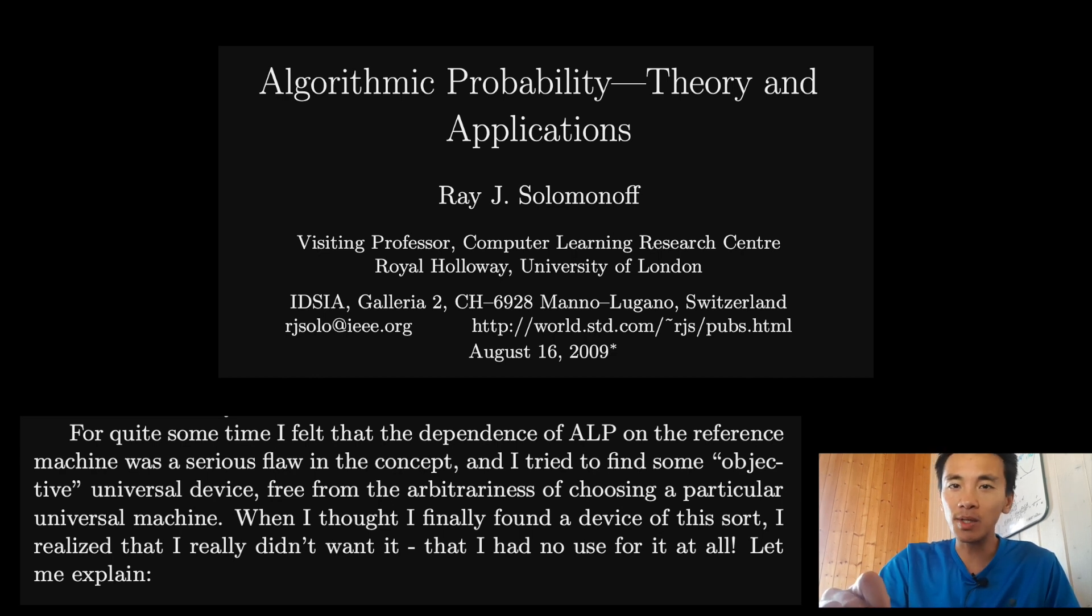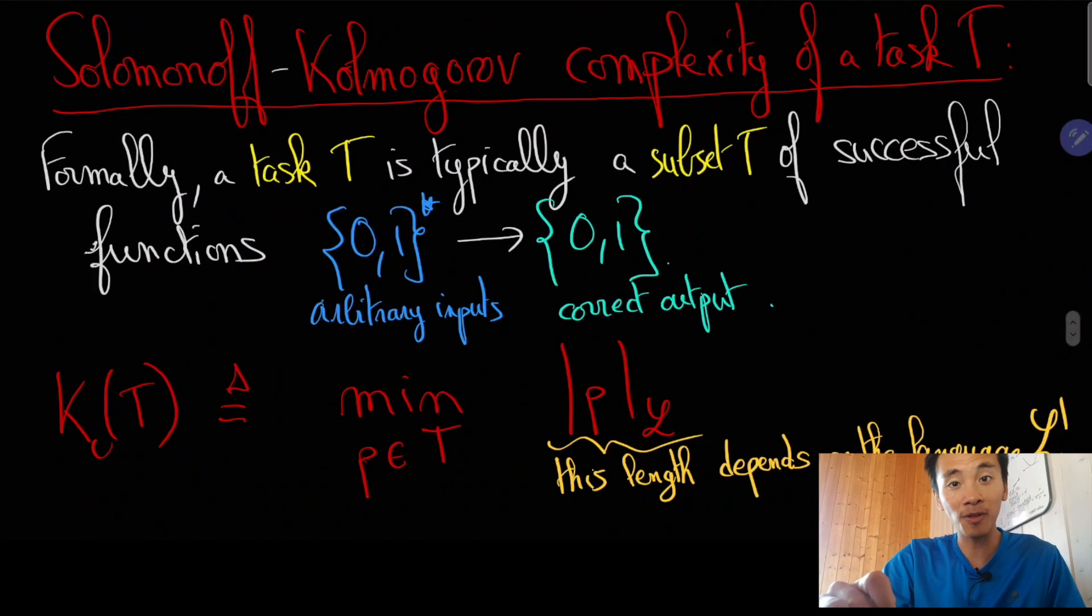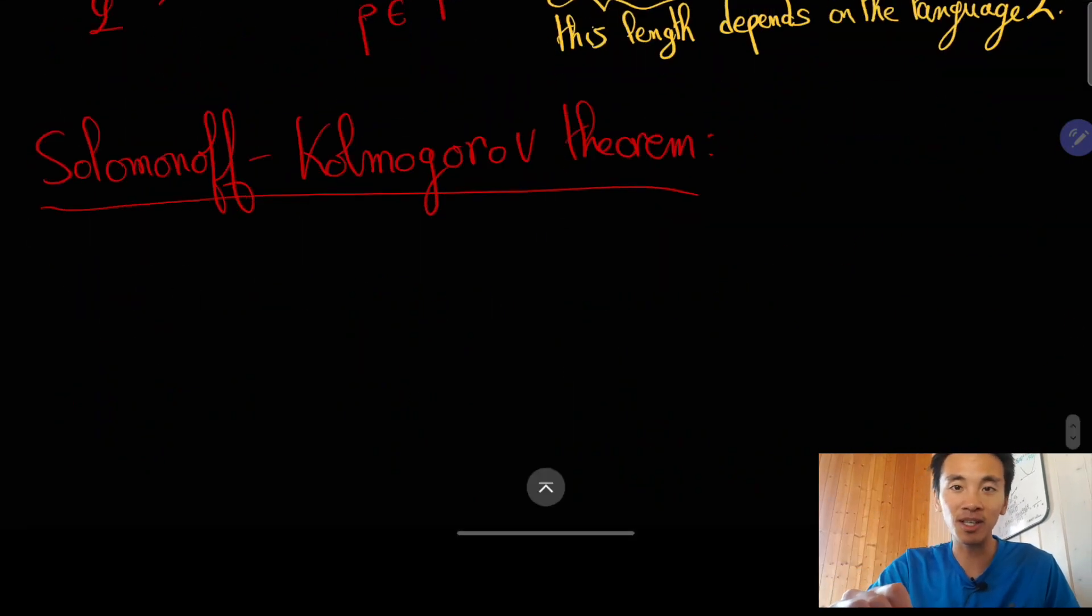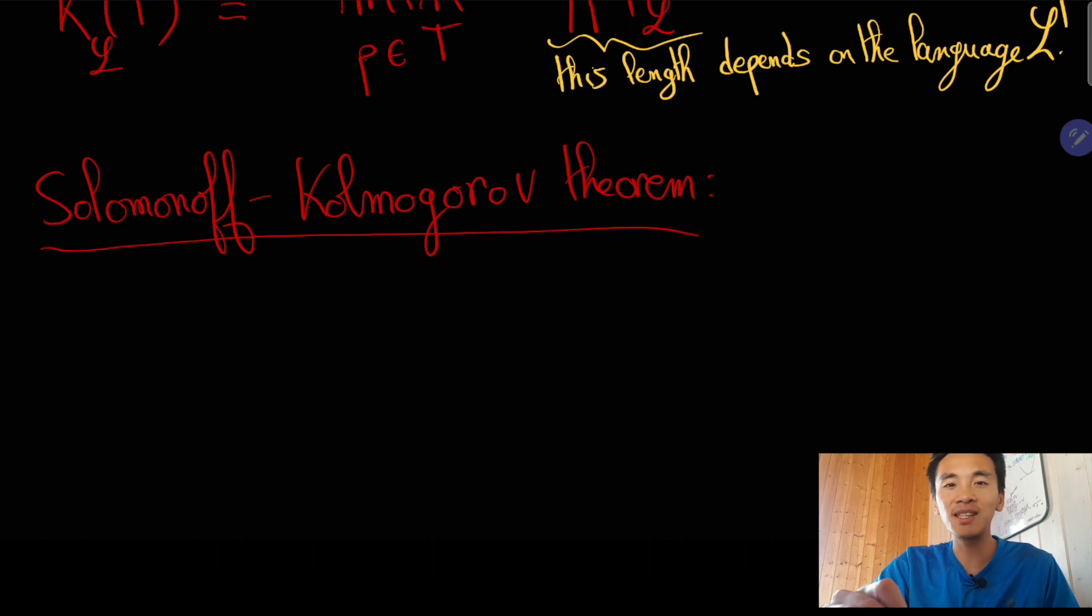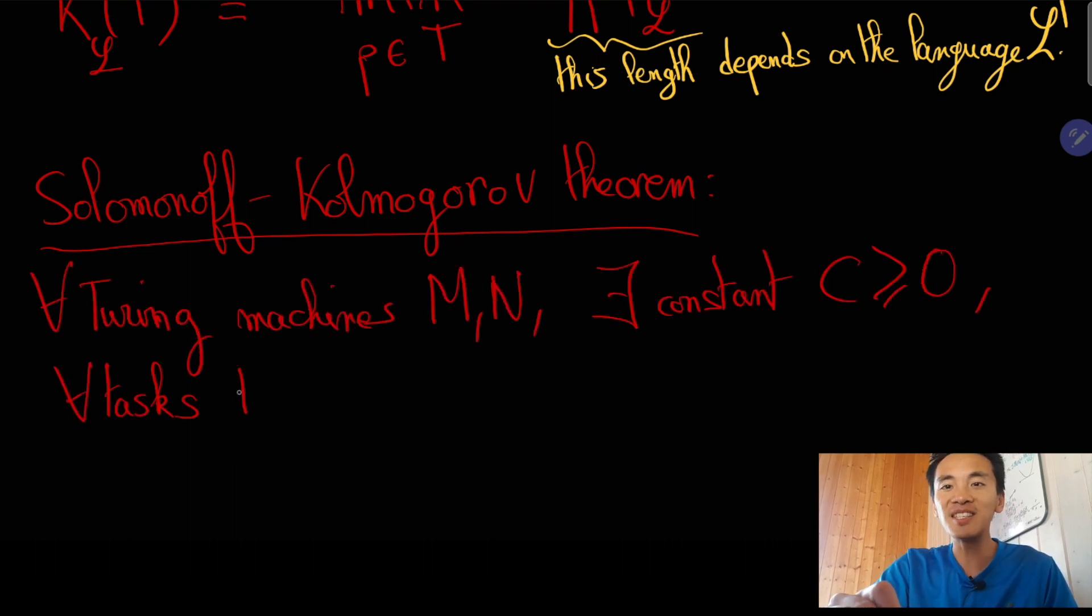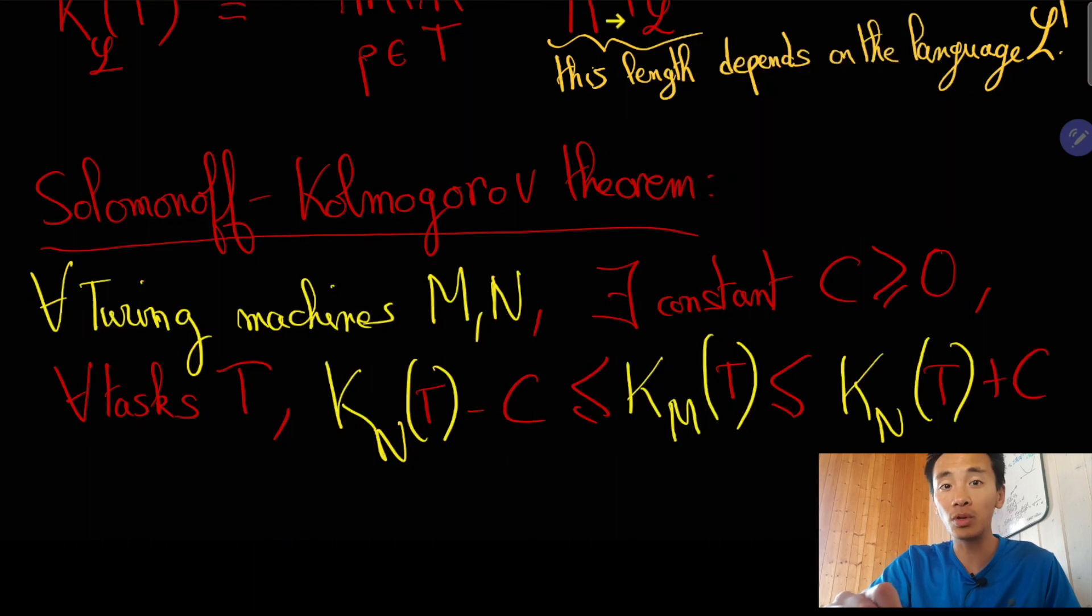And the key reason why Solomonoff did not consider that the subjectivity of the prior he defined or of the complexity measure he introduced was an issue, is by virtue of an important theorem that he and independently Kolmogorov proved, that says that the Solomonoff-Kolmogorov complexity can be essentially defined up to a constant.